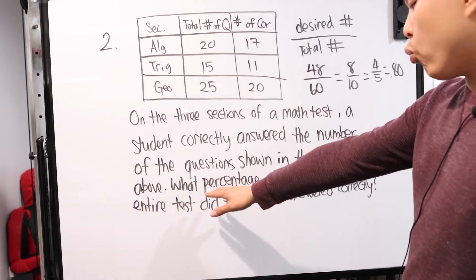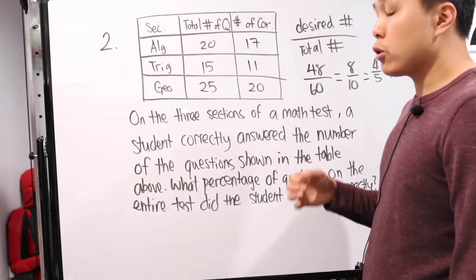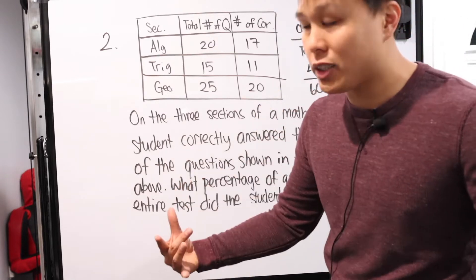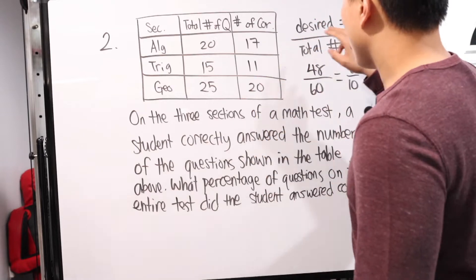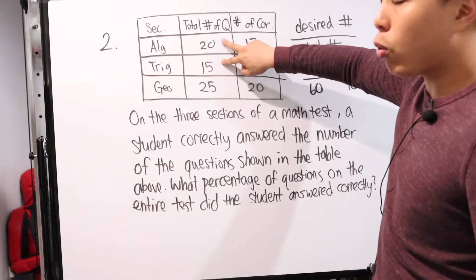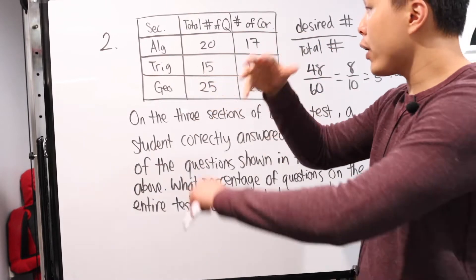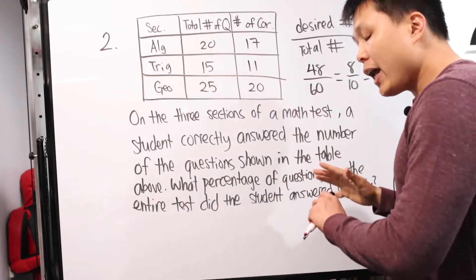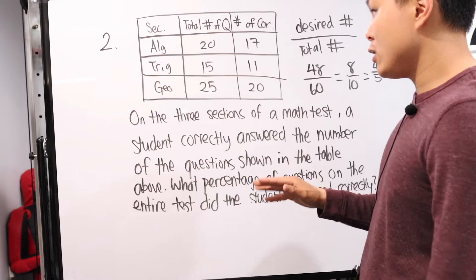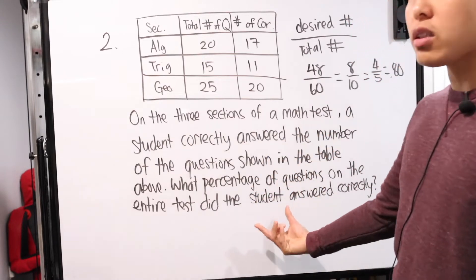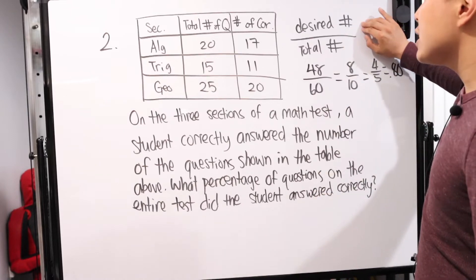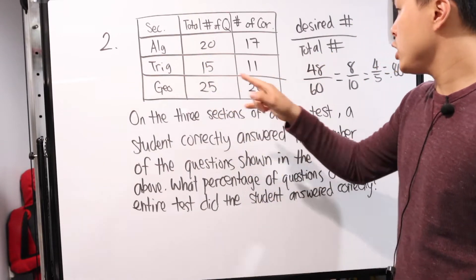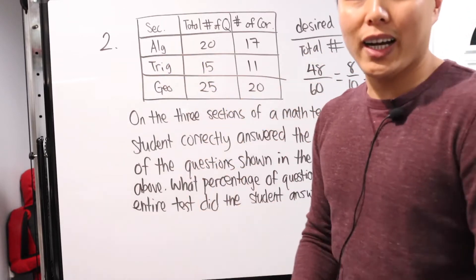Be very careful — there are many variations. They could ask for the percentage of correct answers on just the algebra section, or algebra and trig combined. At that point, your total number is only those sections, and your desired number is only the correct answers from those sections. Always read the context and see what the focus is: it's always whatever you desire over the total number within that context.